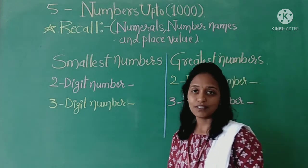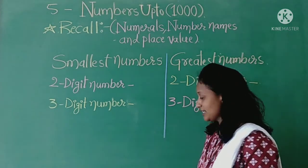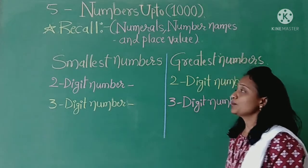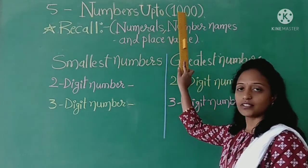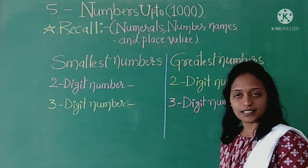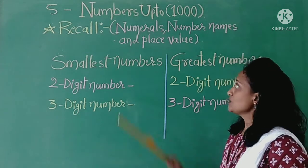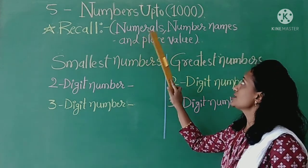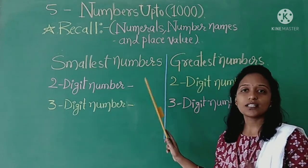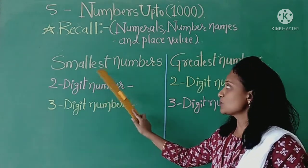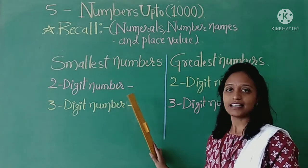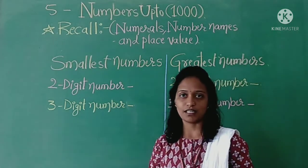Let us begin the class with the new chapter, that is chapter number 5: Numbers up to 1000. In this lesson we will learn about numerals, number names, place values, and what are the smallest and greatest two-digit and three-digit numbers respectively.